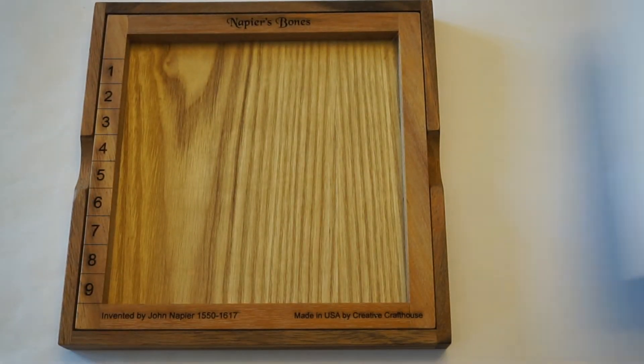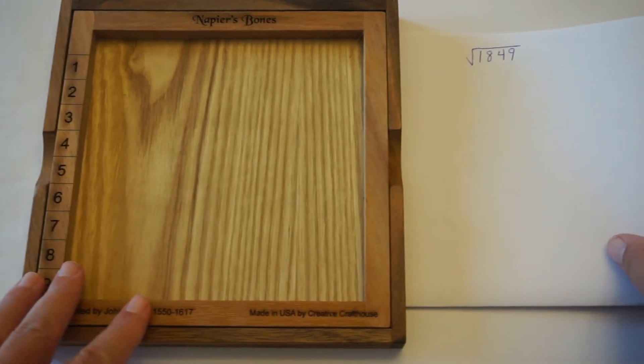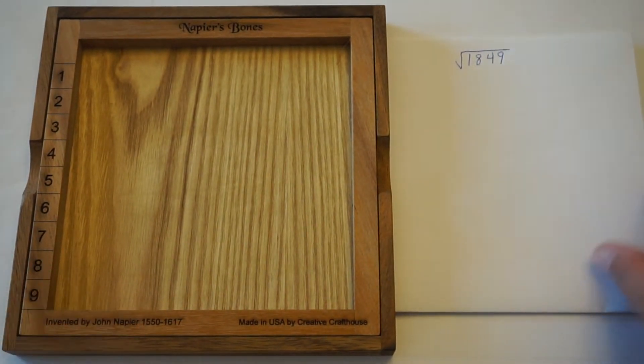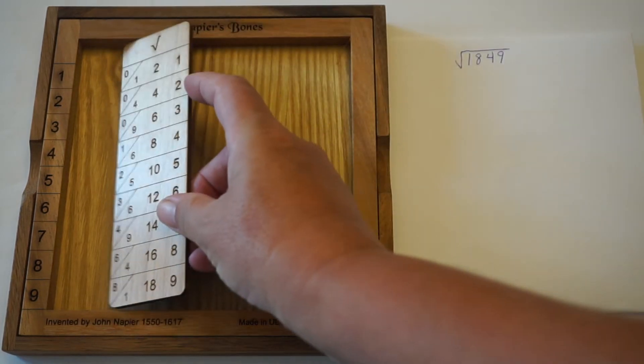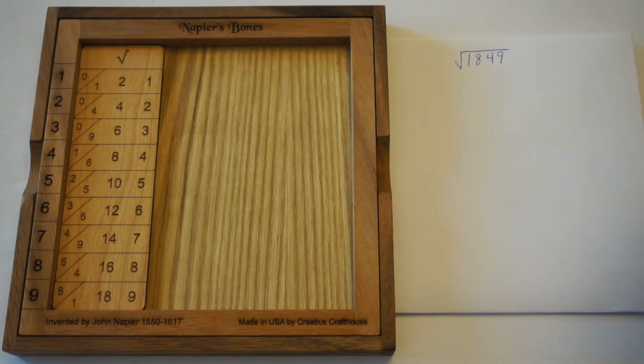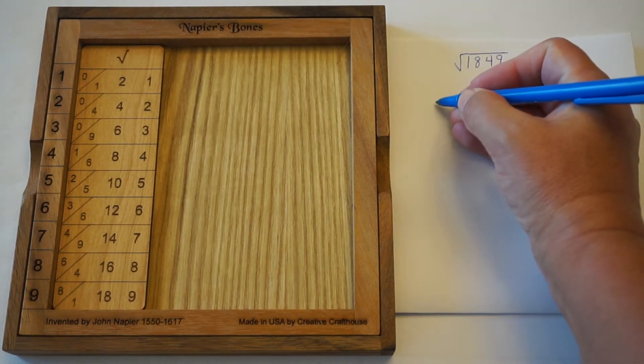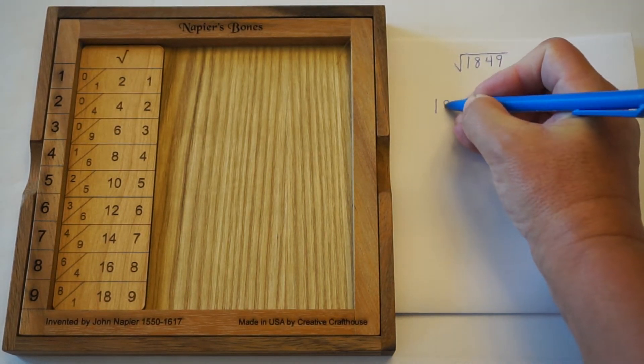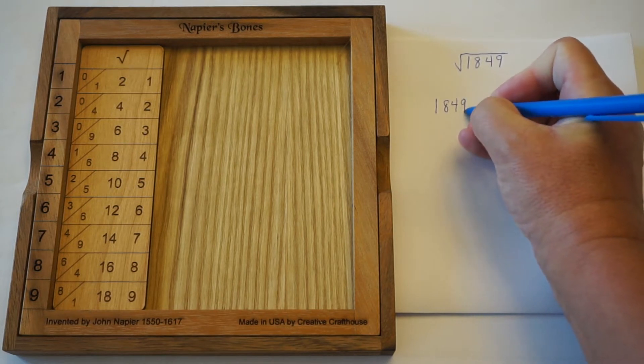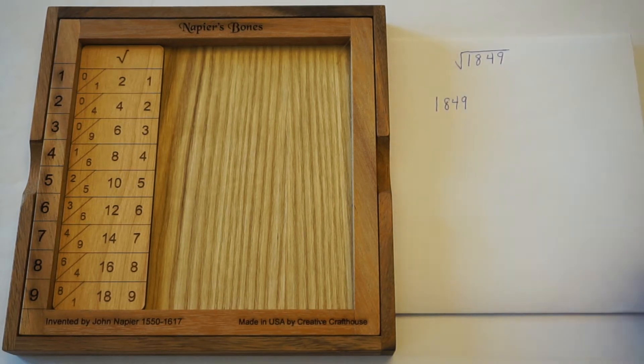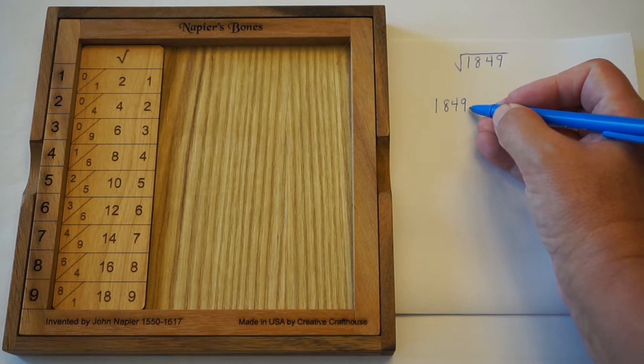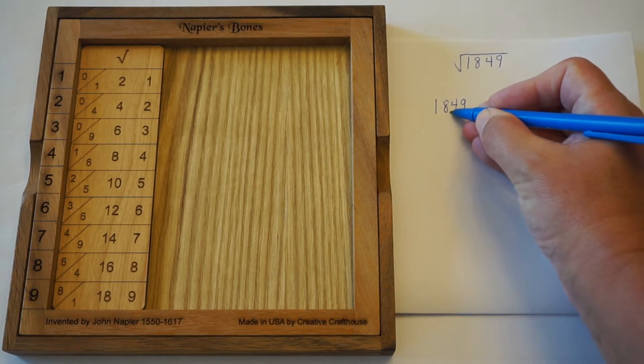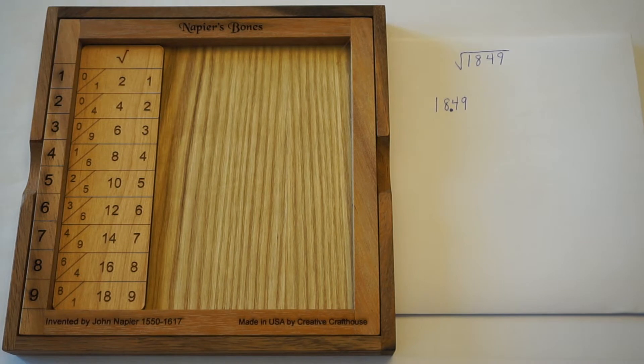So, the problem I'll be working is to find the square root of 1,849. And so what we start with, well, we'll start with this rod, but let me start writing the problem as well. Now, we take the 1,849, and we split it into groups of 2. So I'm going to put a point. This is not a decimal point. It's just a mark of splitting the digits up so that they're in groups of 2.